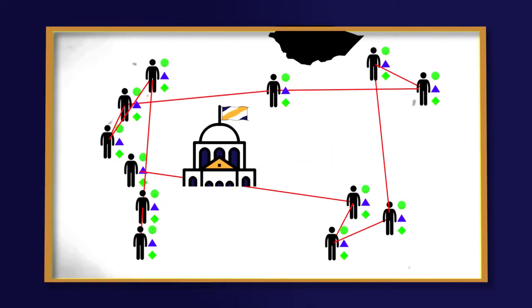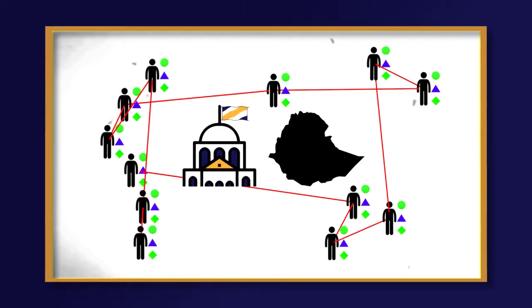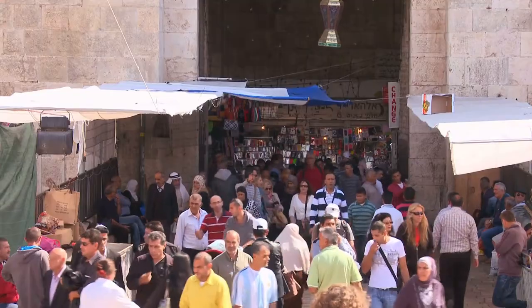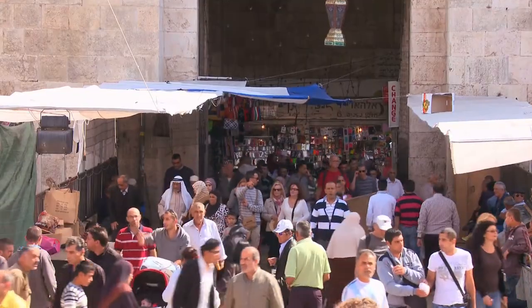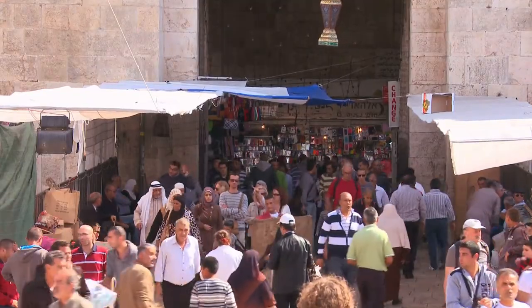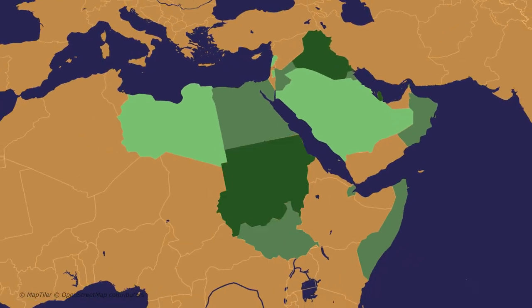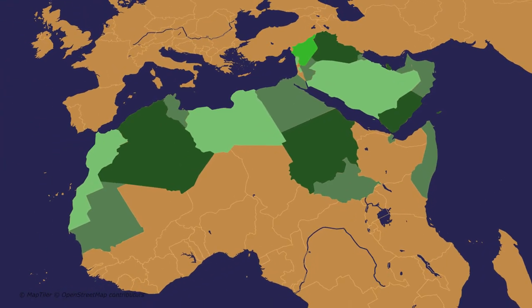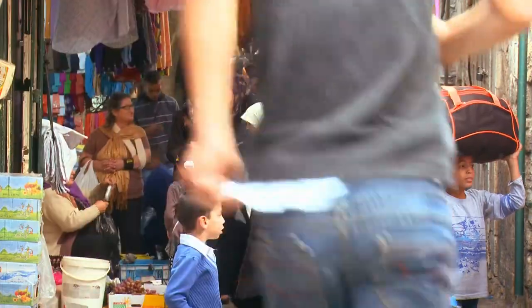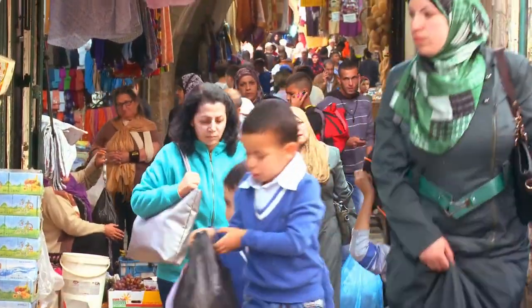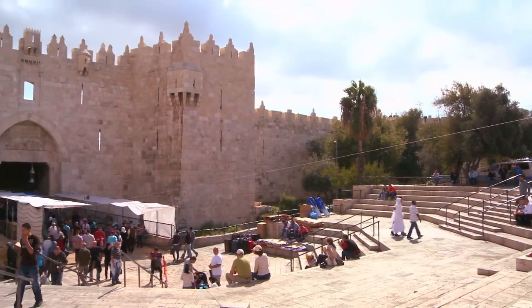The establishment of a government or a recognized territory is not a must here. A good example is the Arab world. The Arabs are a group of 423 million people who share culture, language, and collective aspirations that keep them united. However, they're spread out around at least 22 countries that have different laws and ways to govern. You can live in one of the Arab countries or even get the citizenship if it's possible, but if you don't identify with the Arab culture or speak the language, you won't be part of the Arab nation.